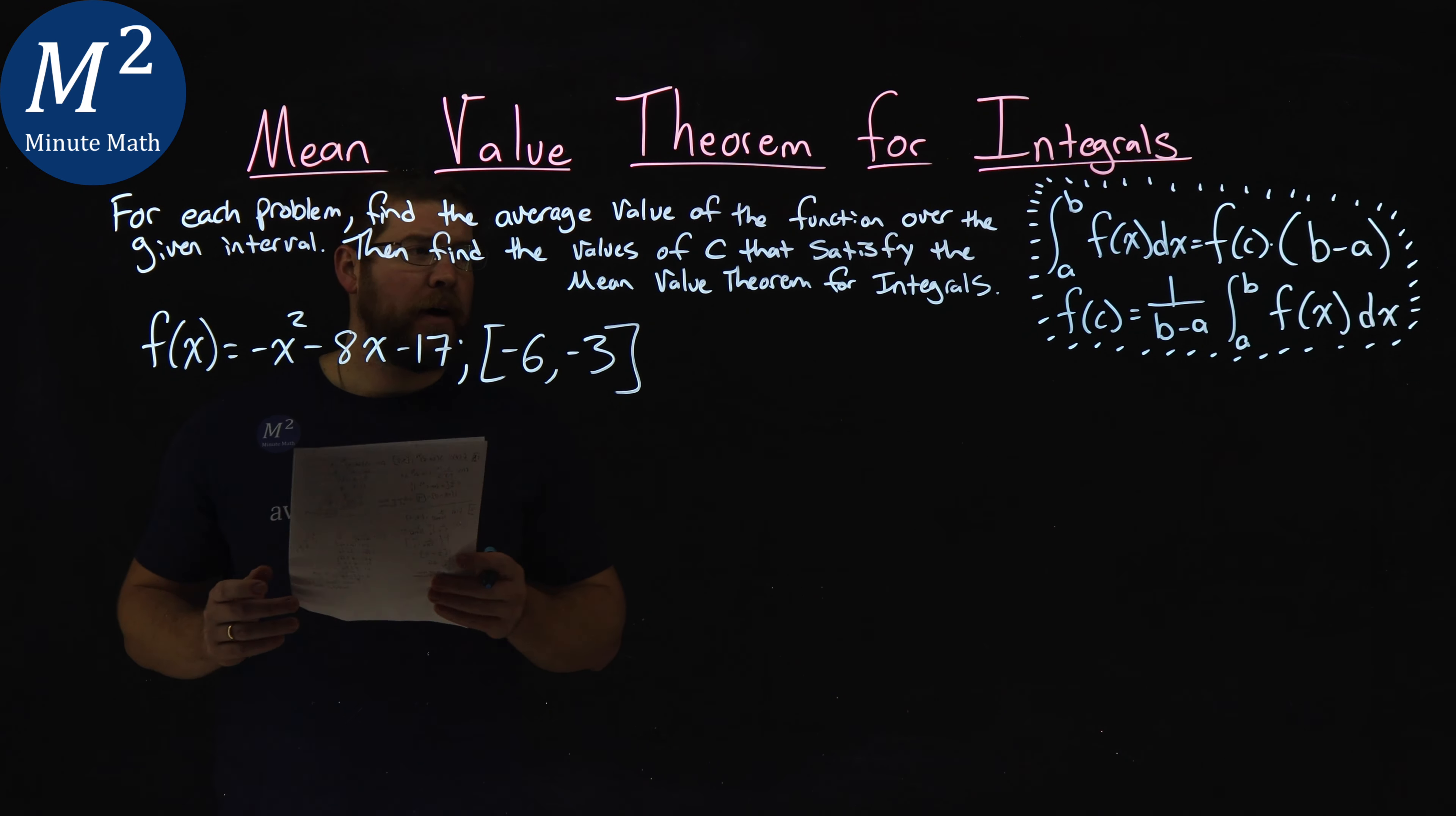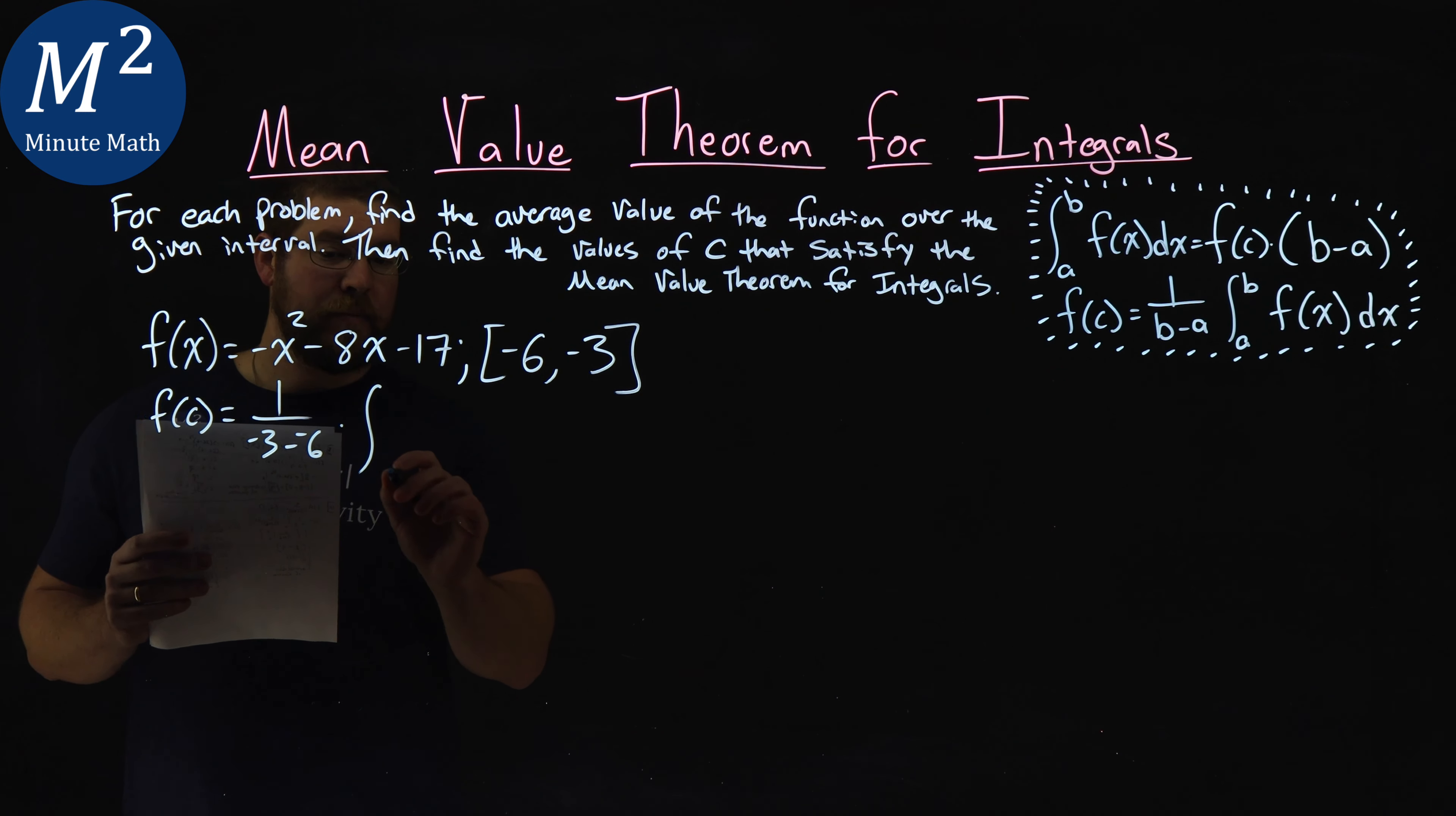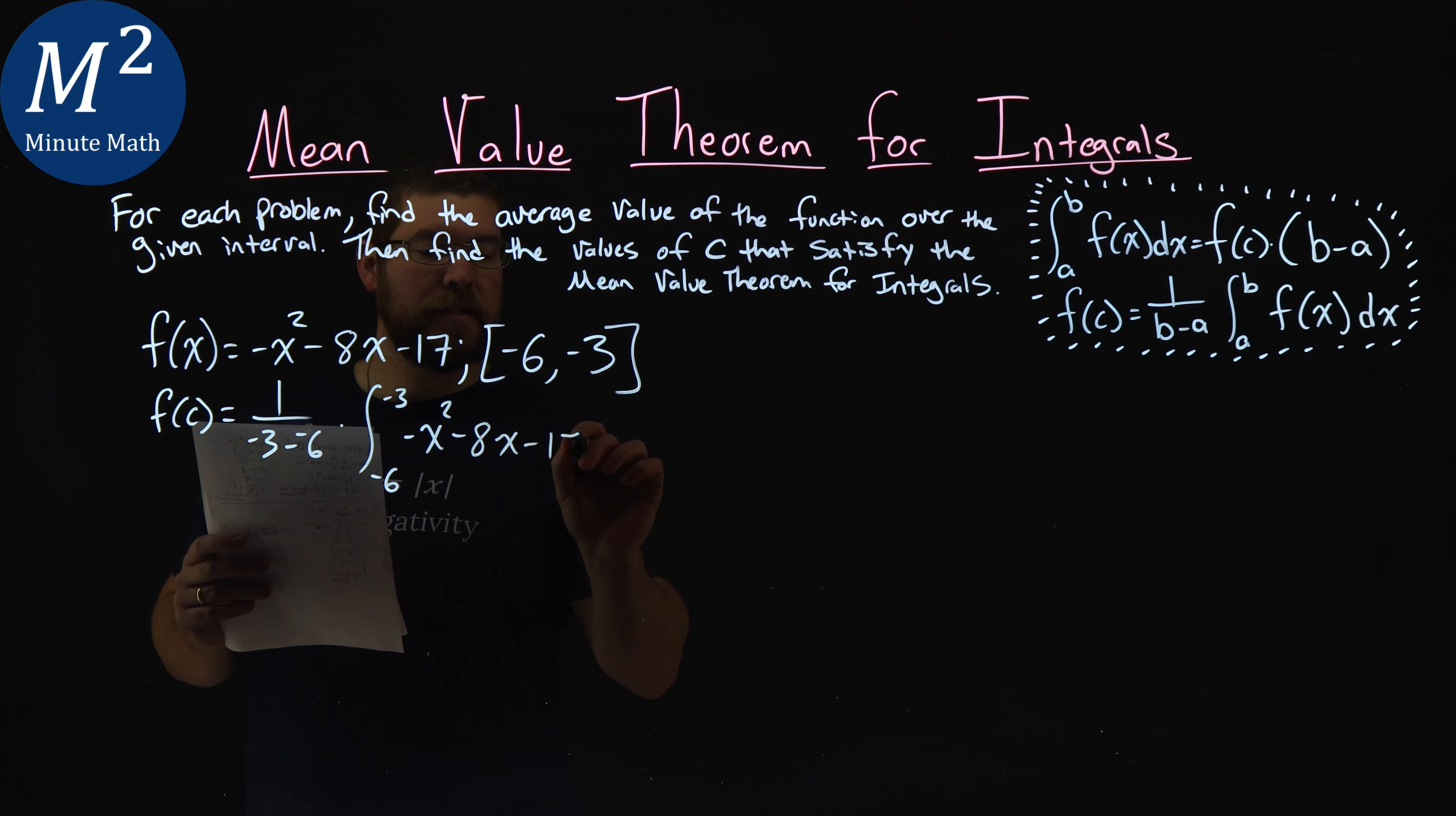Well, first I want to find f(c), the average value. So f(c), using my formula, is 1 over b minus a, negative 3 minus a value negative 6, times the integral from negative 6 to negative 3 of our function, negative x squared minus 8x minus 17 dx.